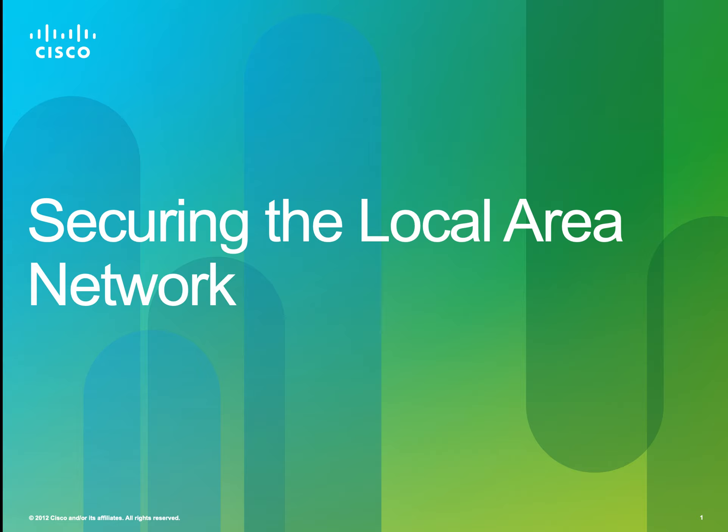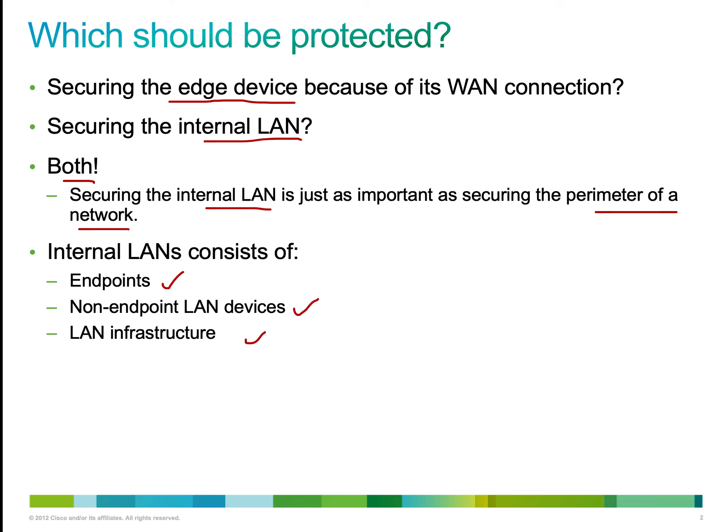Remember in Chapter 4, we looked at ACLs, the firewalls and the ACLs. In Chapter 5, we looked at the IDS and IPS — the intrusion detection and intrusion prevention systems. So in Chapter 6, we're looking at securing the local area network. Let's begin.